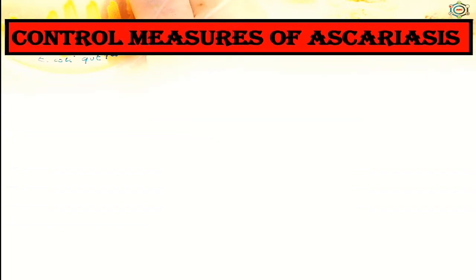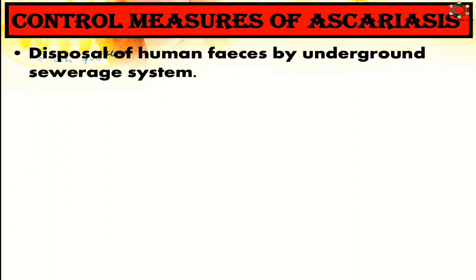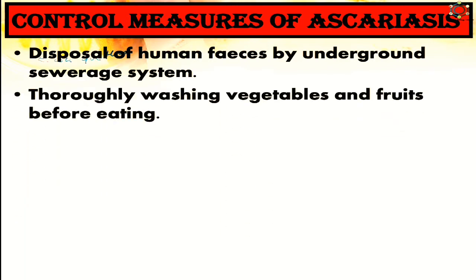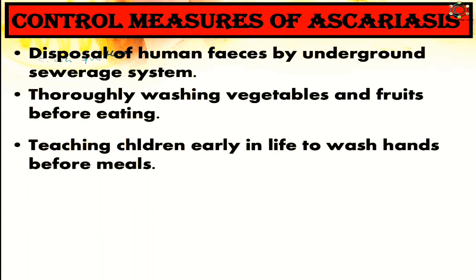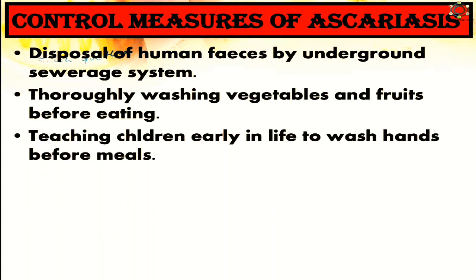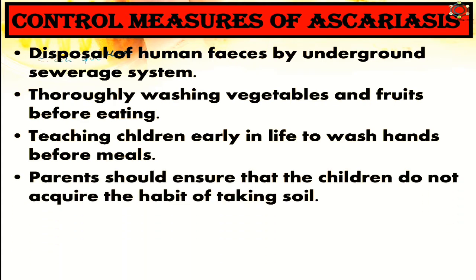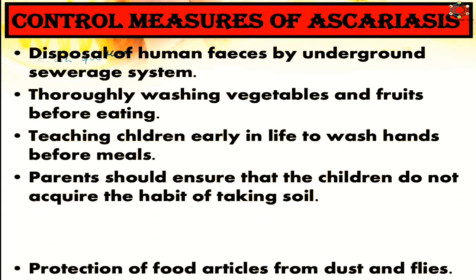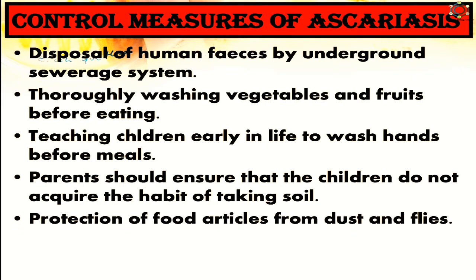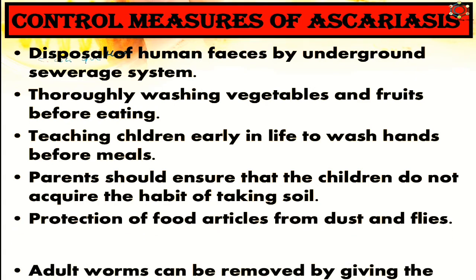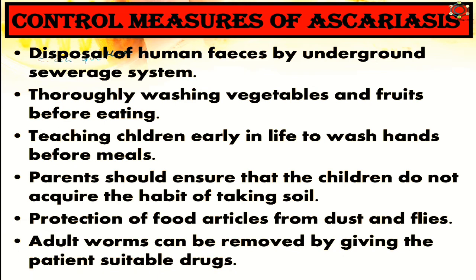Control measures of Ascariasis include disposal of human feces by underground sewerage, thoroughly washing vegetables and fruits before eating, teaching children to wash hands before meals, ensuring children do not acquire the habit of ingesting soil, protecting food articles from dust and flies, and removing adult worms by giving the patient suitable drugs.